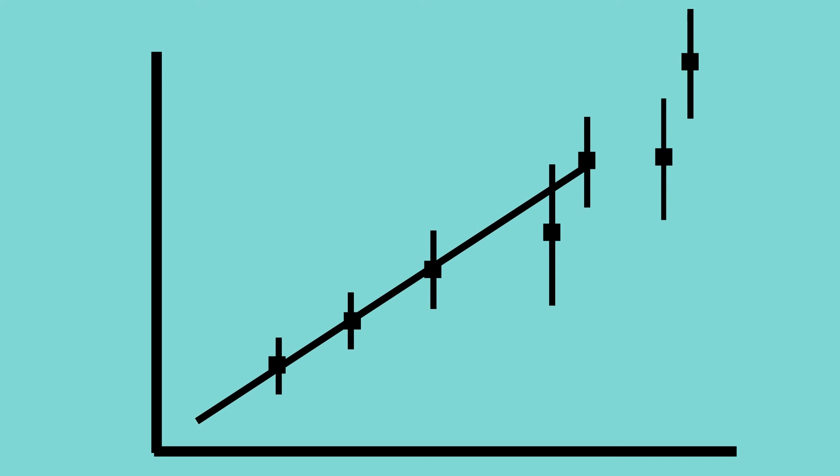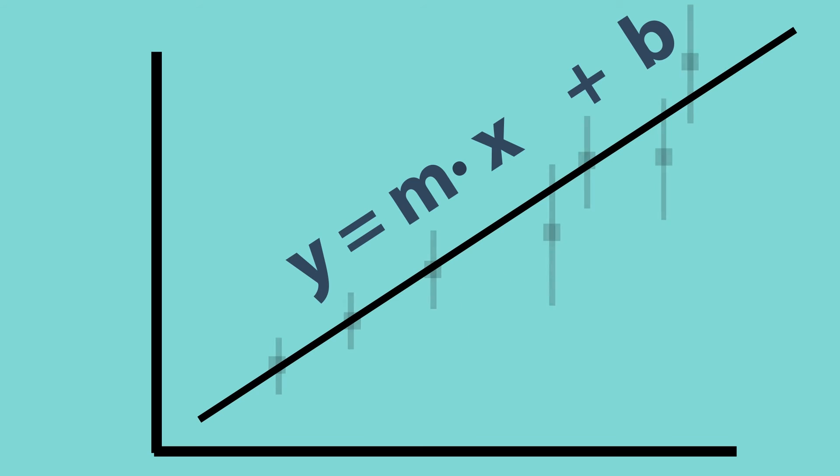What does this mean? Well, you want to know the equation of freefall as a linear equation. So in here we have the y as the height, the slope as one half of the acceleration of gravity, and the x the time squared. And the b equals zero, of course.